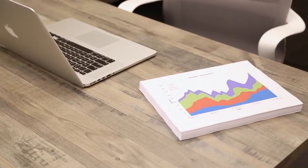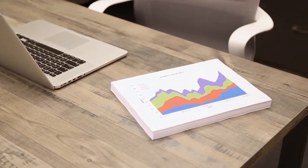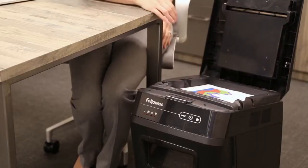The AutoMax 200M can shred up to 200 sheets automatically. Simply load the tray, press play, and continue with your day.